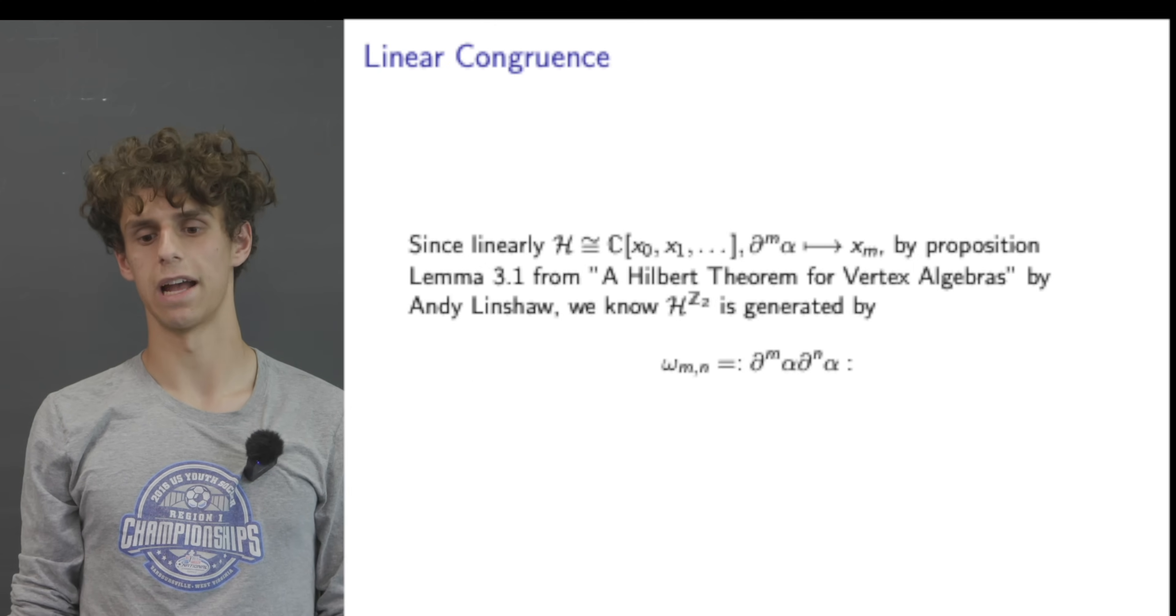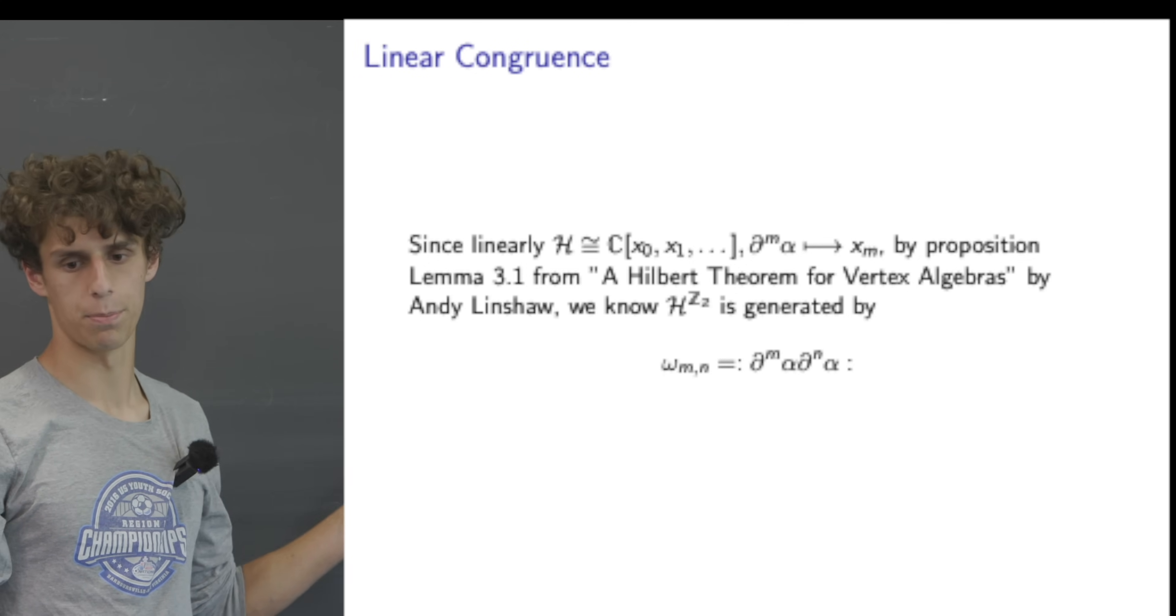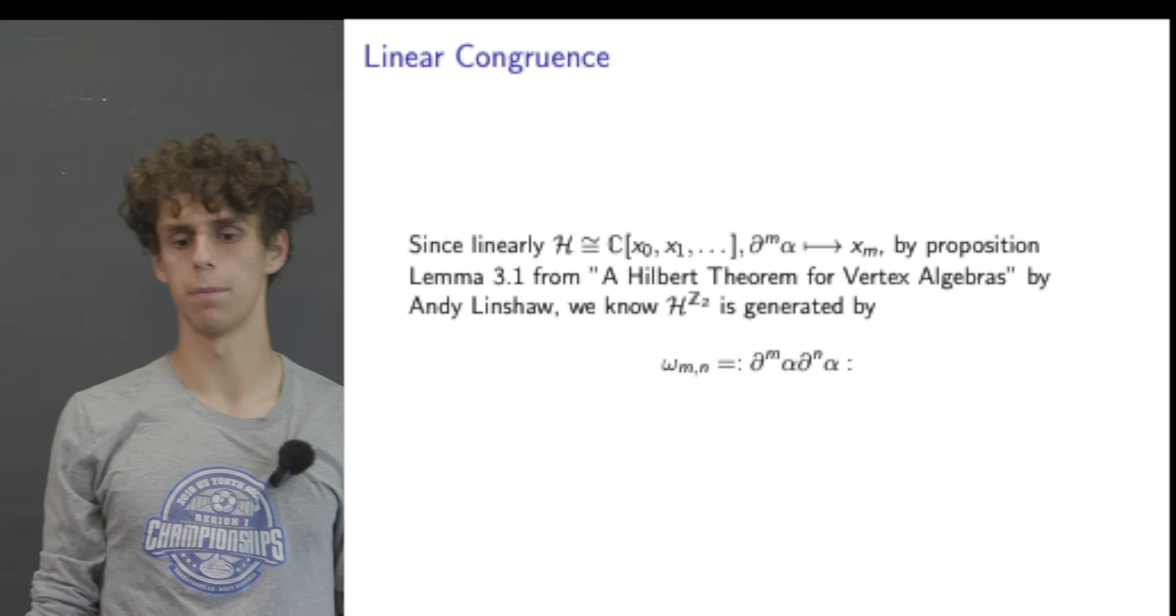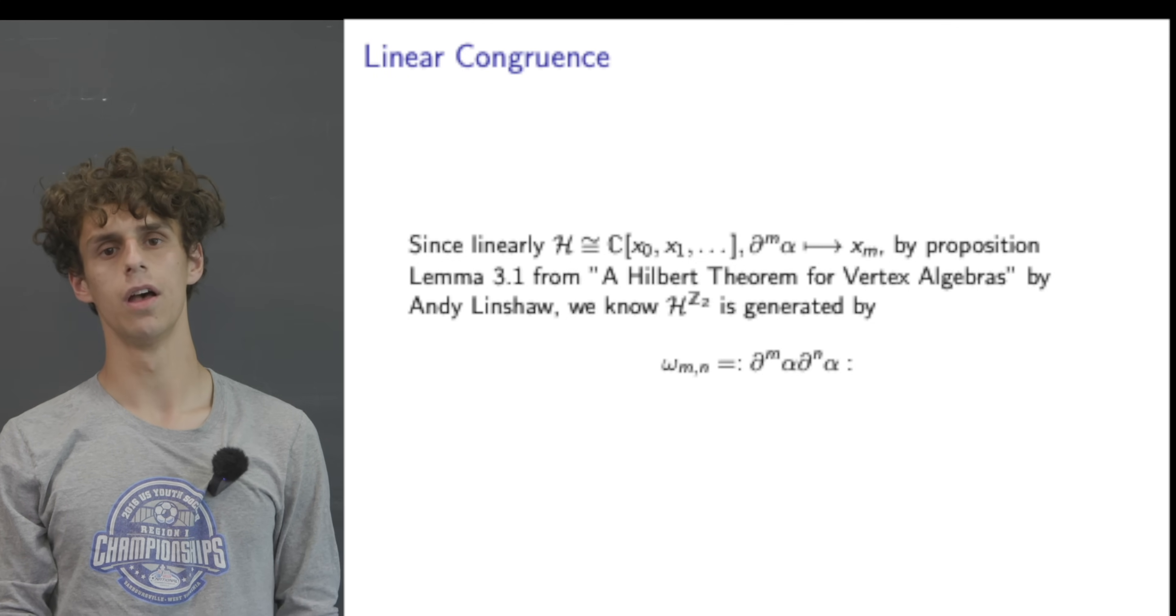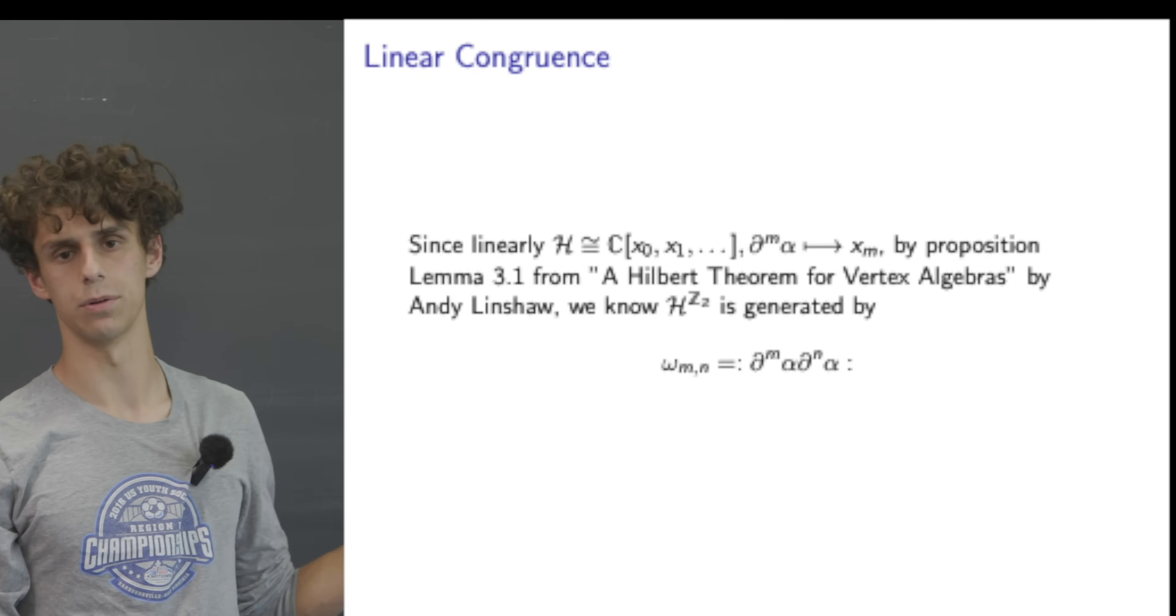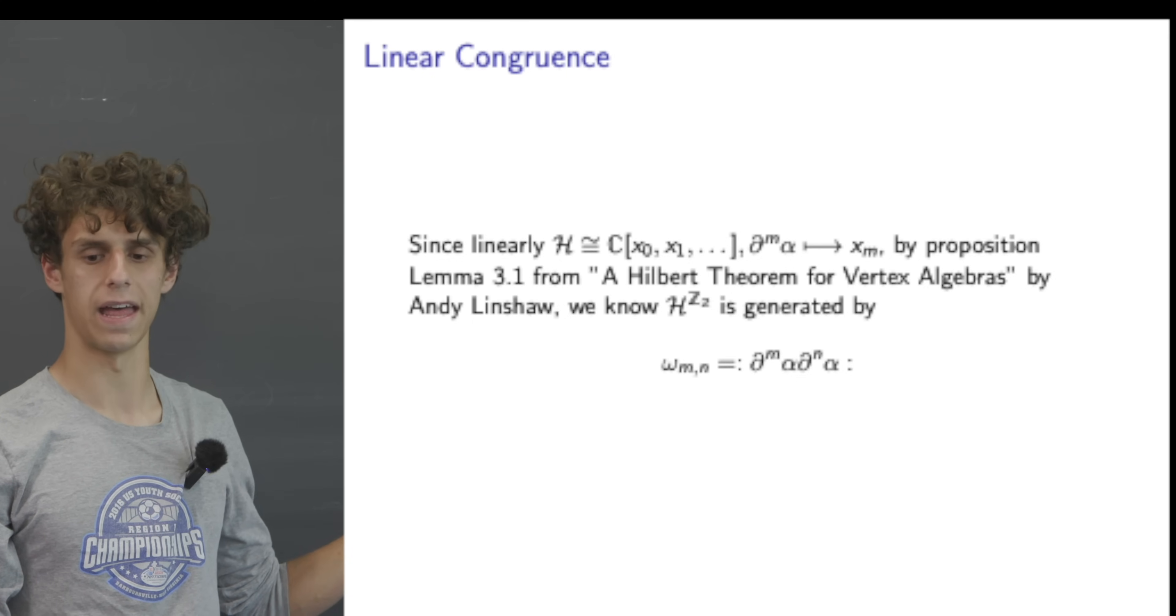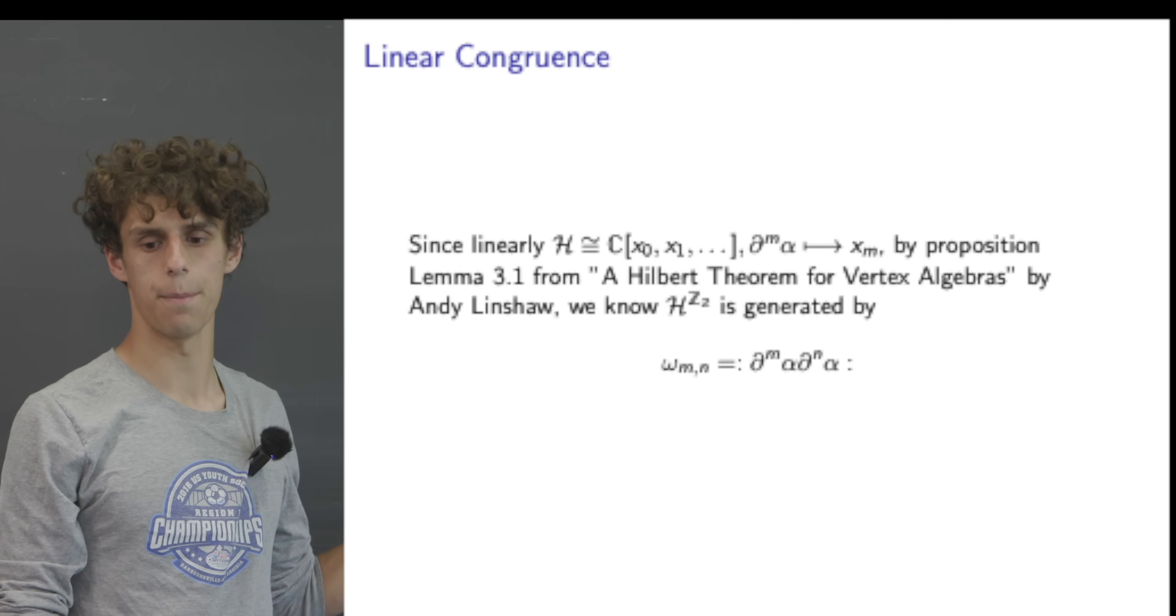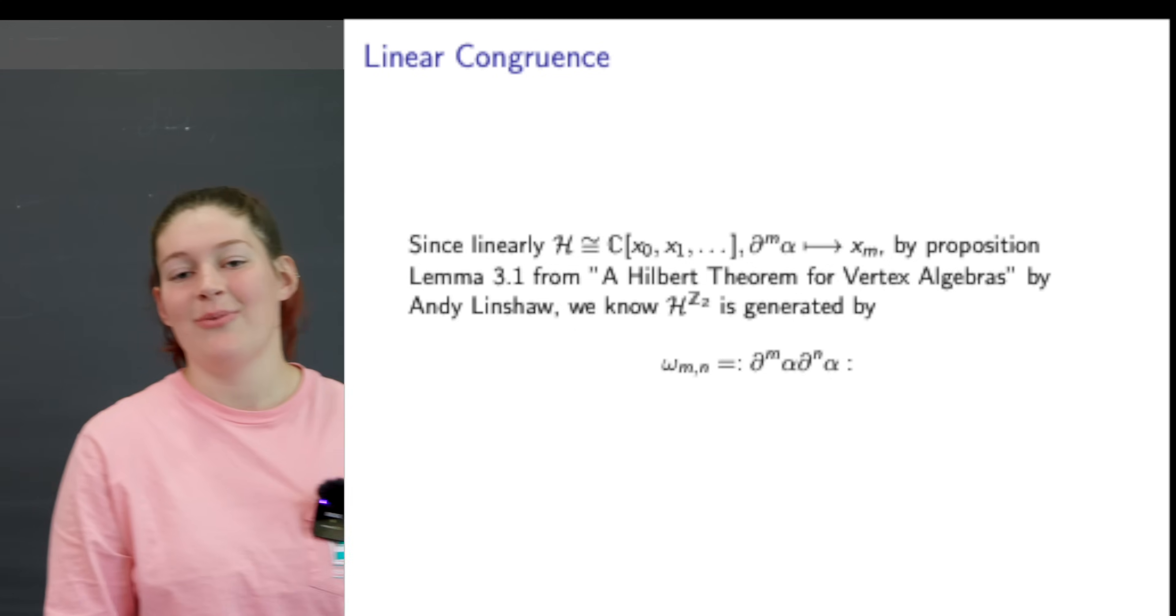Since linearly the Heisenberg algebra is isomorphic to this polynomial ring with this map where the Mth partial of alpha maps to X_M, by proposition lemma 3.1 from A Hilbert Theorem for Vertex Algebras by Andy Linshaw, we know that this Heisenberg algebra with Z2 acting on it is generated by omega_{M,N} where we define that as the normally ordered product between the partial derivative M with respect to alpha and the partial derivative N alpha.